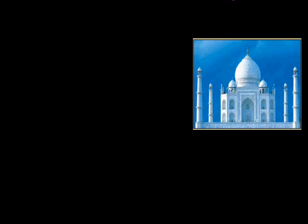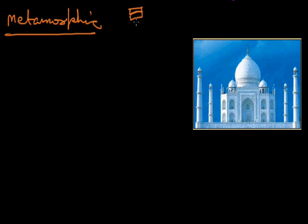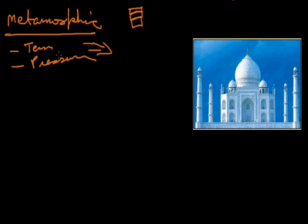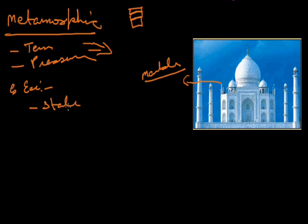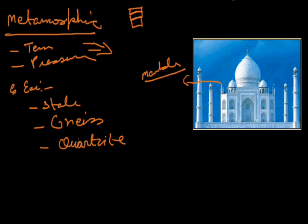The third type of rock is Metamorphic rocks. First there are igneous rocks, then sedimentary rocks, and then comes metamorphic rocks in the third stage. Because of temperature and pressure, sedimentary rocks and sometimes igneous rocks change their texture and forms — this is known as metamorphic rocks. An example is marble: because of high temperature and pressure, limestone changes its form and becomes hard marble. Other examples include Slate, Gneiss, and Quartzites, which are also metamorphic rocks.